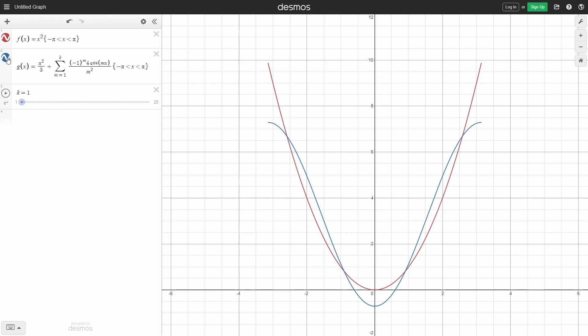But now watch the short animation as we add more and more terms. Amazing. The Fourier series is essentially identical to x squared, and that's only 20 terms. That's the beauty of the Fourier series.